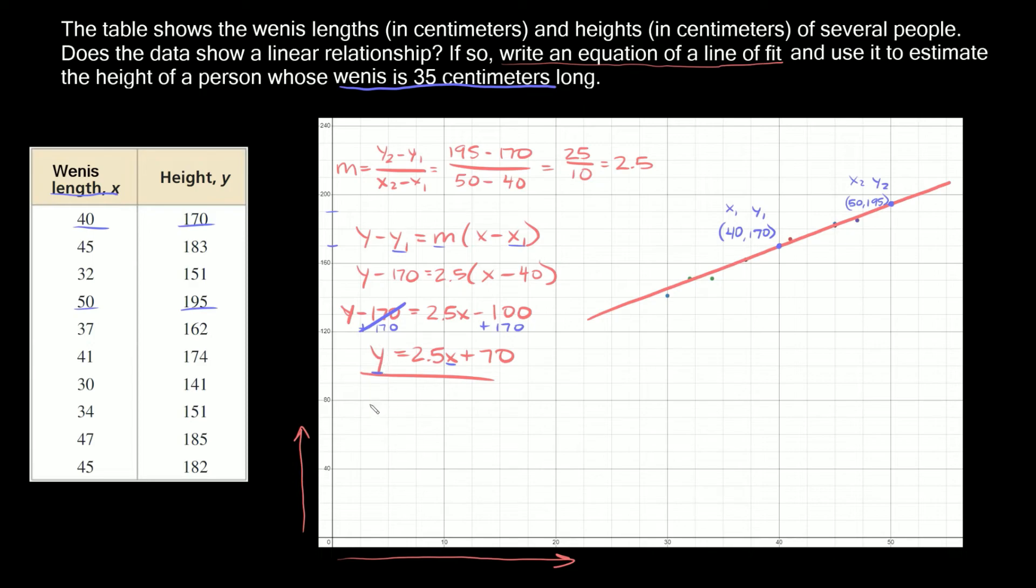Here we're going to get y equals 2.5 times 35 plus 70. So y equals 2.5 times 35 equals 87.5 plus 70, so y equals 157.5 centimeters. Whenever someone has a wenus length of 35 centimeters, that means their height is going to be approximately 157.5 centimeters.